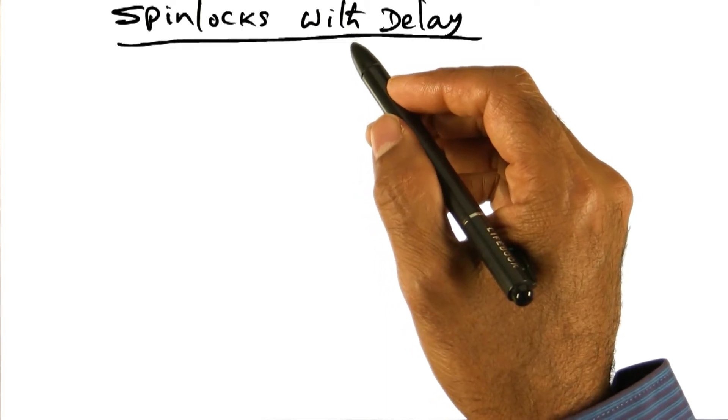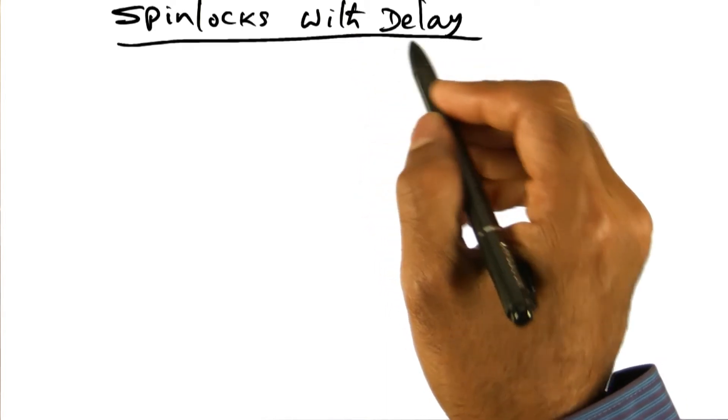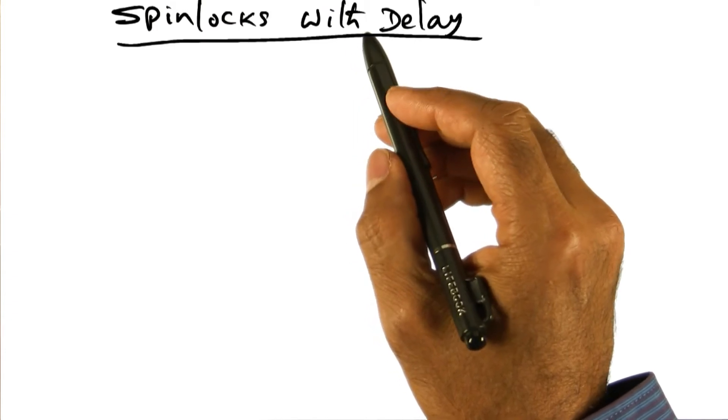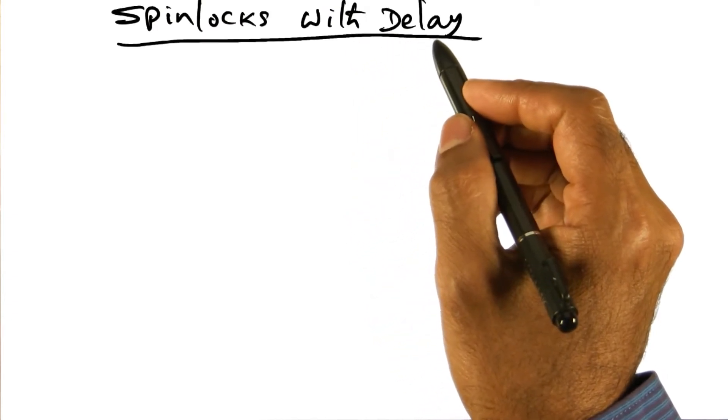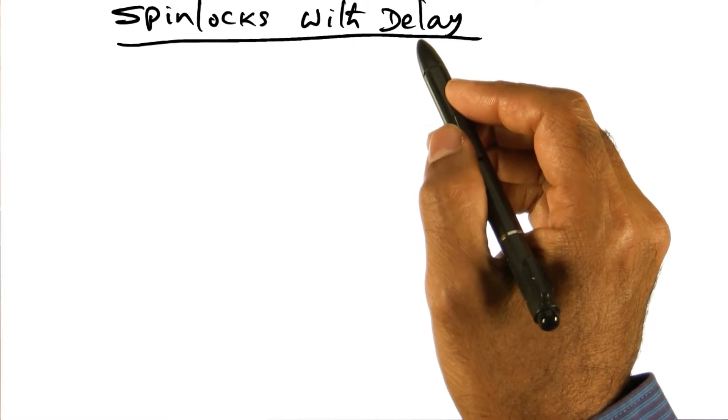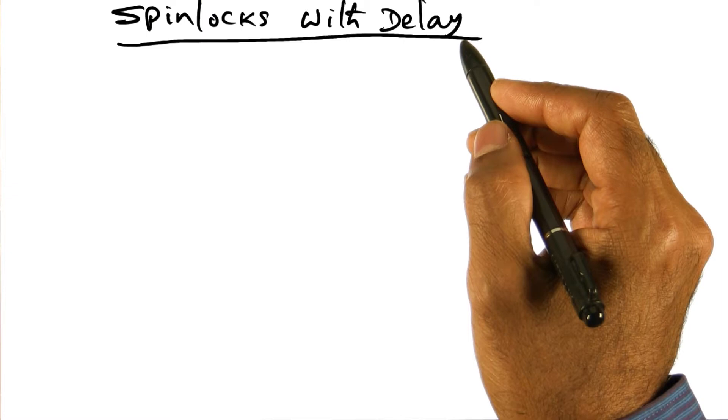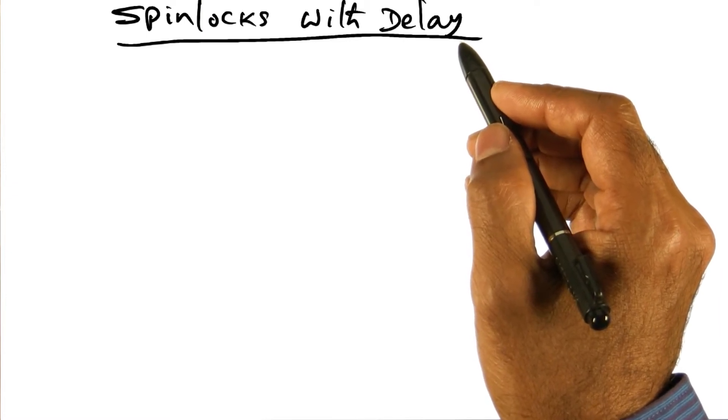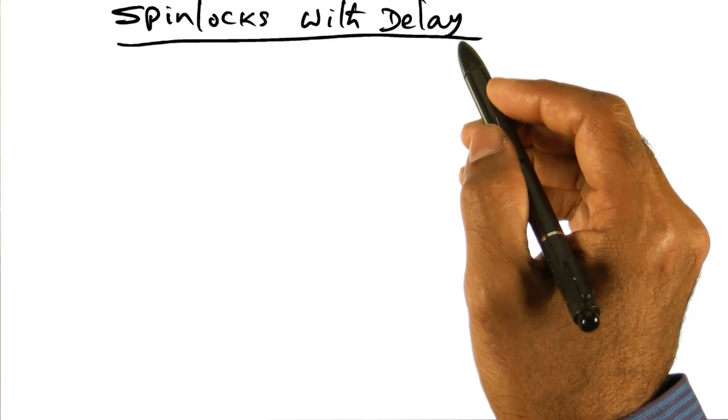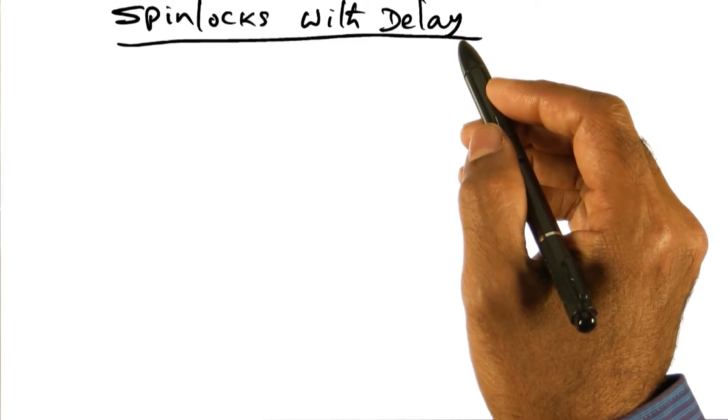Now, in order to limit the amount of contention on the network when a lock is released, we're going to do something that we often do in real life: procrastination. Basically, the idea is the following. Each processor is going to delay asking for the lock, even though they observe that the lock is released. They're not going to immediately try to get the lock; they're going to wait for a little bit of time.